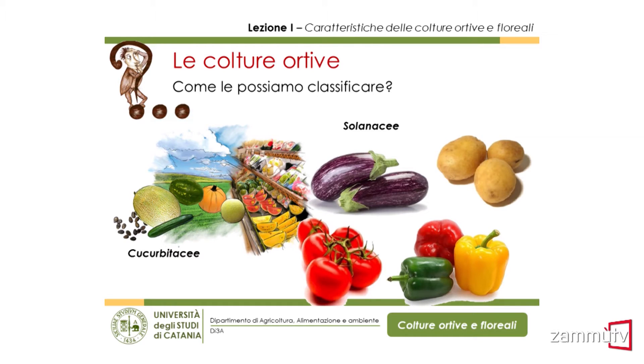Con così tante colture, quale criterio possiamo utilizzare per classificarle? La classificazione è necessaria per semplificarci lo studio e imparare a conoscere queste piante. In genere si utilizzano due criteri. Il primo è attinente alla famiglia botanica: tutte le piante con caratteristiche simili vengono raggruppate in un'unica grande famiglia. Questo è un criterio abbastanza valido: ad esempio, le solanacee e le cucurbitacee hanno caratteristiche abbastanza simili, meccanismi di impollinazione e una biologia fiorale ampiamente sovrapponibile.